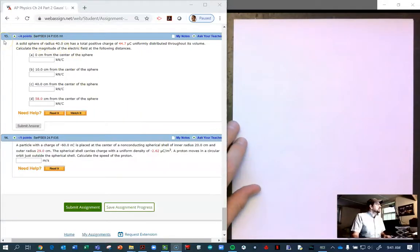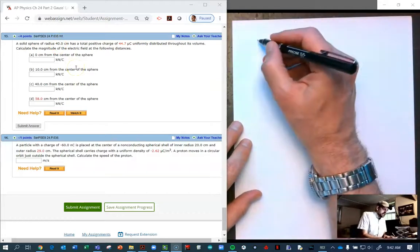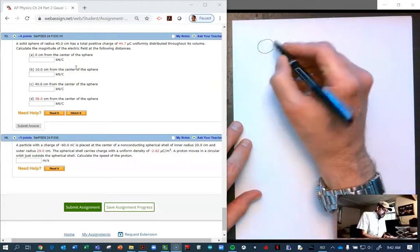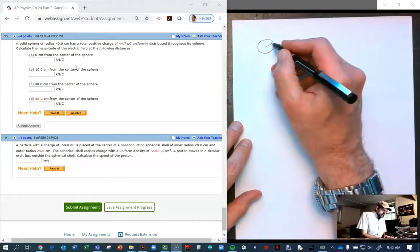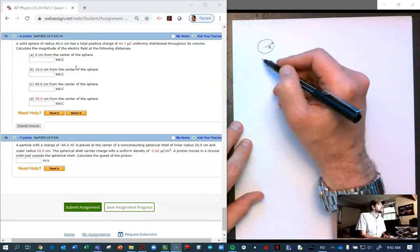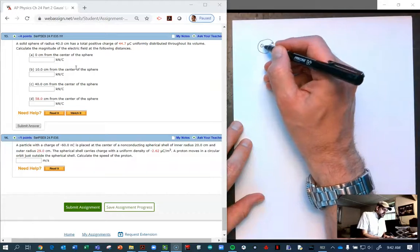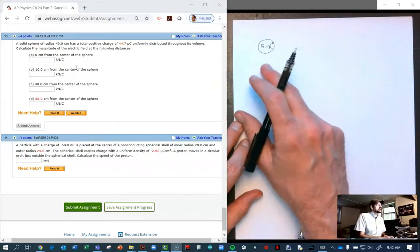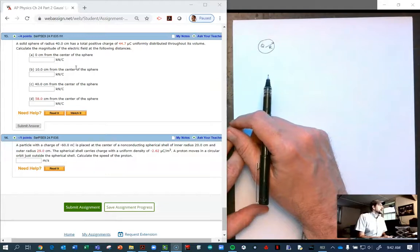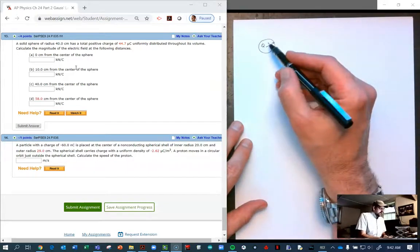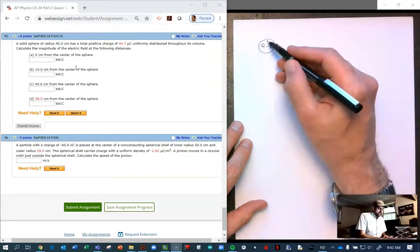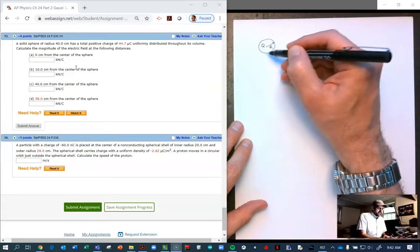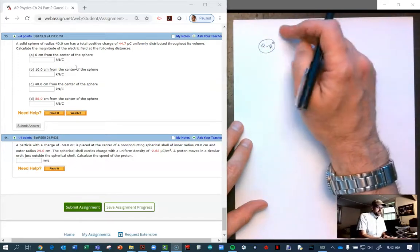All right folks, this is number 13 for my students, and this comes from Serway Jewett, the 9th edition, Chapter 24, problem number 35. So we have a solid sphere of a certain radius, the big radius R, and it has a charge Q uniformly distributed throughout. So this must be an insulator and not a conductor. And then we're going to calculate the electric field in lots of different locations. Basically, we're going to look at the inside, the edge of the conductor, and then we're going to look on the outside as well.